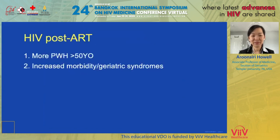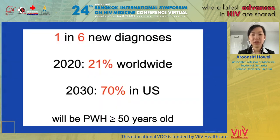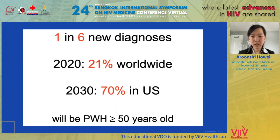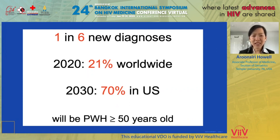In the post-ART world, there are two things we're seeing. First, there are more and more people with HIV over the age of 50. Of all new HIV diagnoses this year, one in six will be over 50 — as high as 17%. In 2020, up to 21% of people with HIV worldwide were over 50. And in less than 10 years, by 2030, up to 70% of patients with HIV in the U.S. will be over the age of 50. That's a lot.